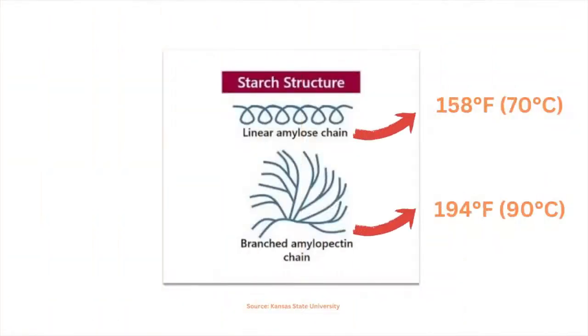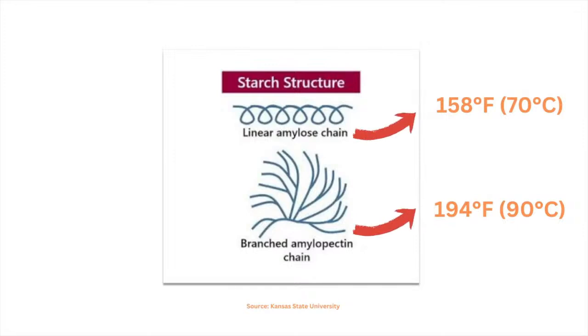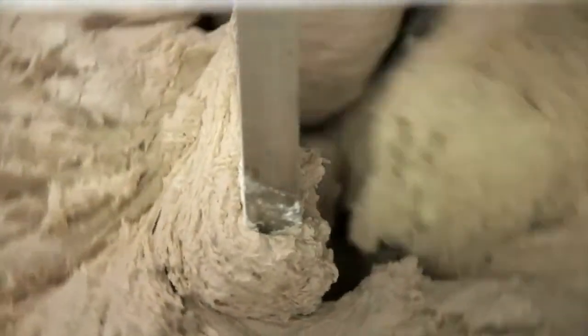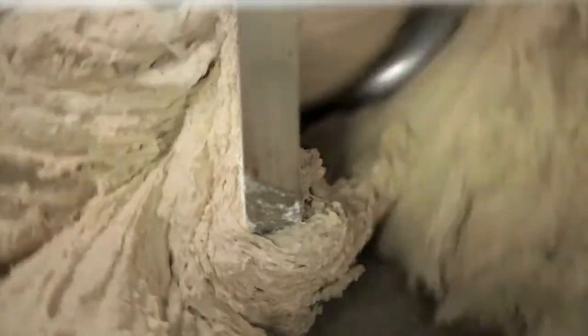The amylose and amylopectin fractions start to solubilize at 158°F (70°C) and 194°F (90°C), respectively. These fractions become loose and eventually become more reactive and prone to enzyme attack, especially amylases.